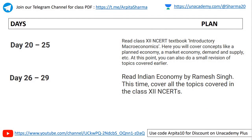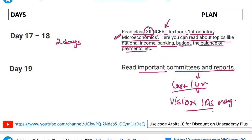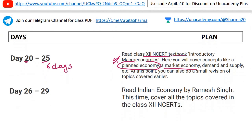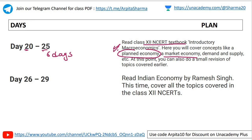Day twenty to twenty-five: six days to read the class 12th NCRT textbook again. Here you have to read important concepts like planned economy, market economy, and introductory macroeconomics. So far you have covered microeconomics — now you will cover macroeconomics.